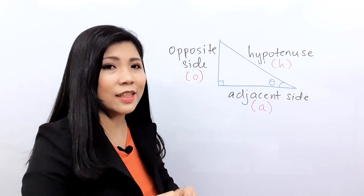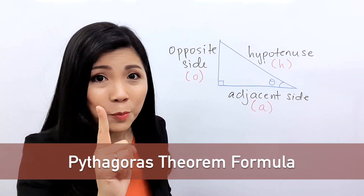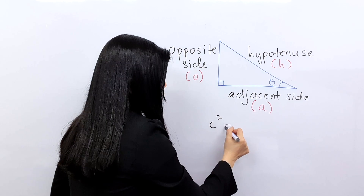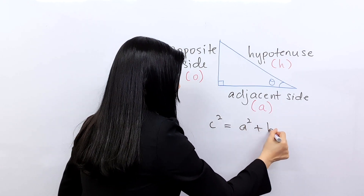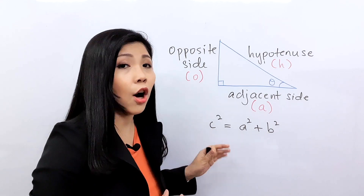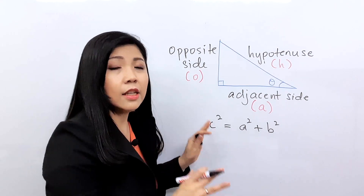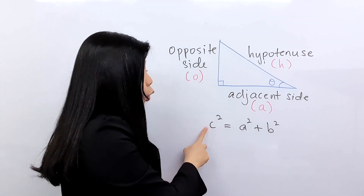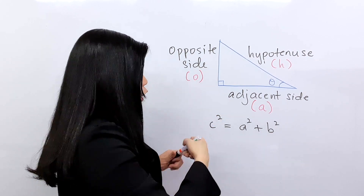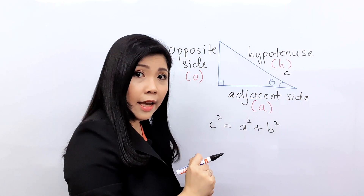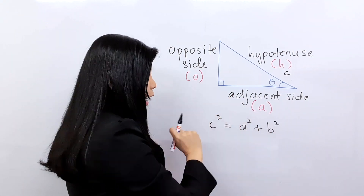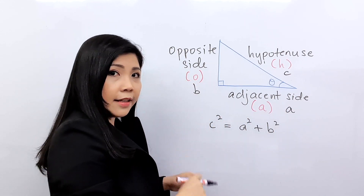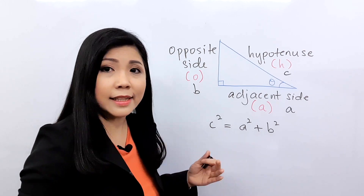In this chapter you just need to memorize one important formula: C squared equals A squared plus B squared. This is to find the length of the sides. Make sure that C, which is the hypotenuse, is on the left-hand side. This is the hypotenuse, so this is my C. My A and B can be either of the remaining sides, so I put this as A and this as B. The answer will be in length, whether it's cm or meters.